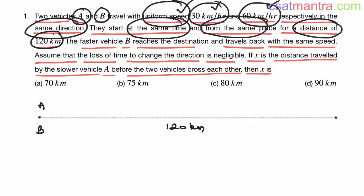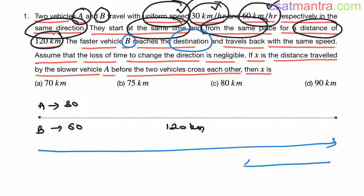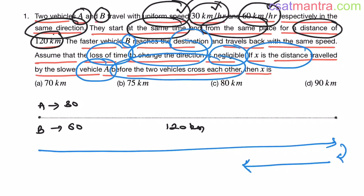Vehicle A, vehicle B, they are traveling in the same direction from the same place at the same time. Vehicle A at 30 kilometers per hour, vehicle B at 60 kilometers per hour. Now faster vehicle B reaches the destination, reaches this point, and travels back with the same speed. Assume that the loss of time to change the direction is negligible. So taking this turn time is negligible. Now if X is the distance traveled by the slower vehicle before the two vehicles cross each other.